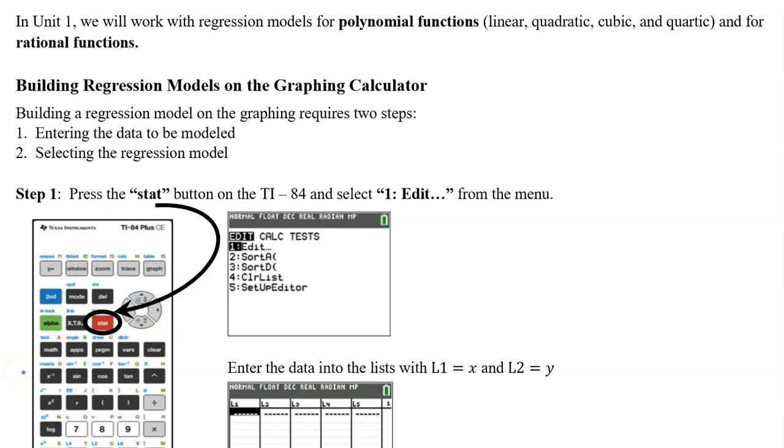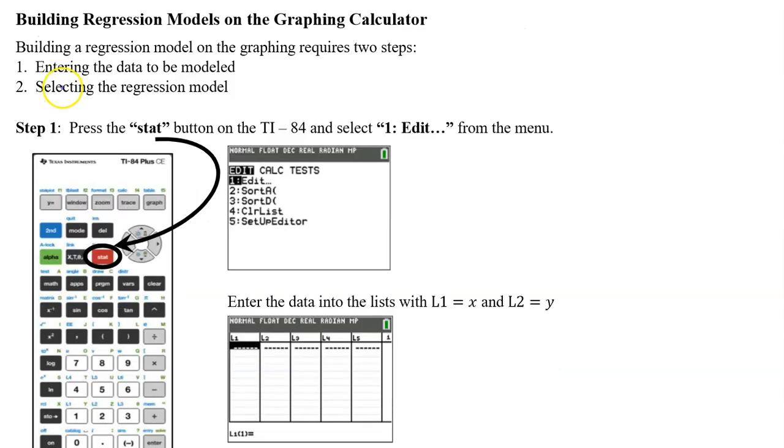In Unit 1, we will work with regression models for polynomial functions and rational functions. The polynomial functions we will deal with are linear, quadratic, cubic, and quartic. Building a regression model on the graphing calculator requires two steps. Step 1 is entering the data to be modeled, and step 2 is selecting the appropriate regression model.